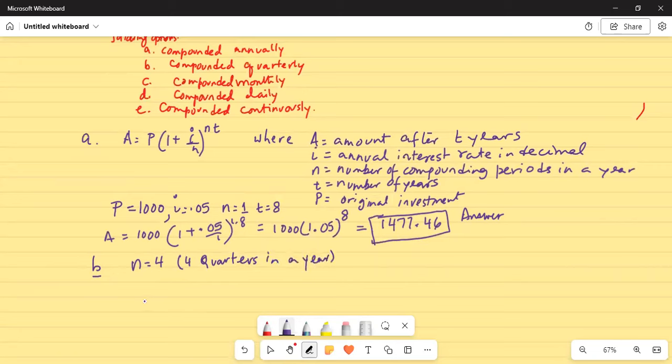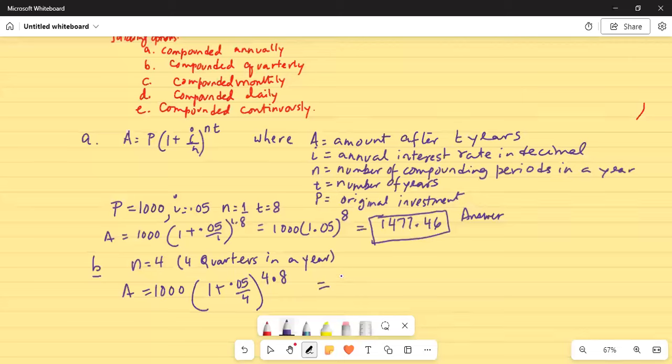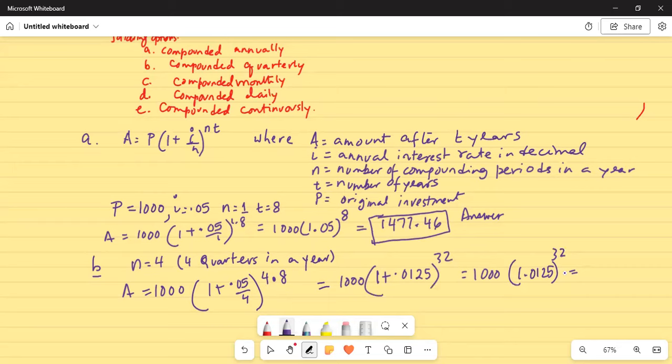So the amount will be 1000 times (1 + 0.05/4) to the power of 4 times 8. So we have 1000 times (1 + 0.05/4). Divided by 4 is 0.0125, raised to the power of 4 times 8 is 32. Or 1000 times 1.0125 exponent 32.